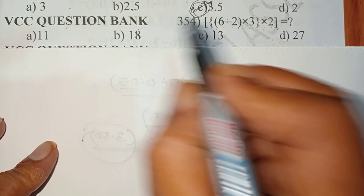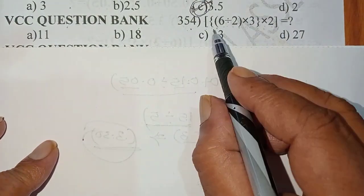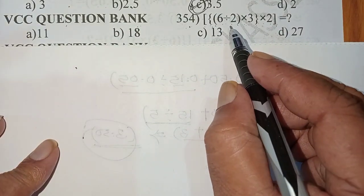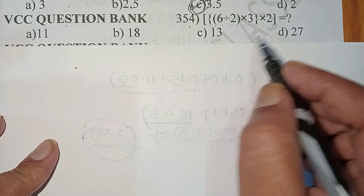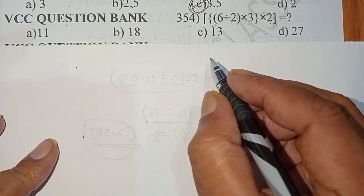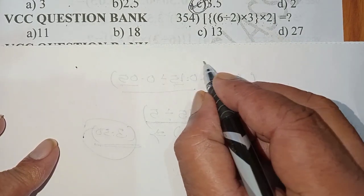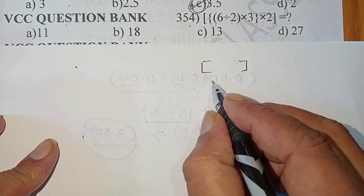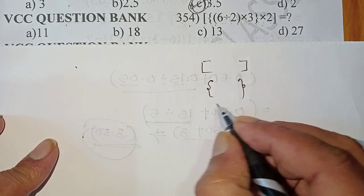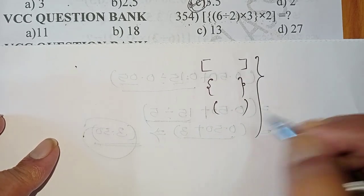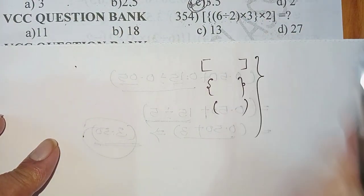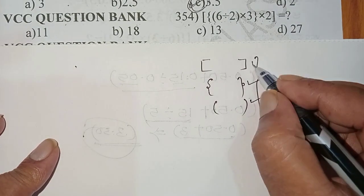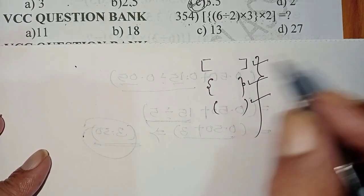VCC question bank 354. Here big brackets and flower brackets and small brackets, three brackets are included in this question. I will give you brief introduction about brackets. This is called big brackets, also called square brackets, flower brackets, and small brackets. These are three brackets included in this question. First we should open small bracket, next flower bracket, next square bracket to get the answer.